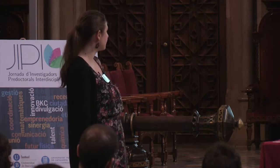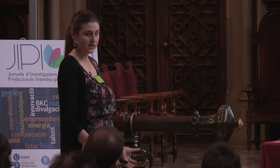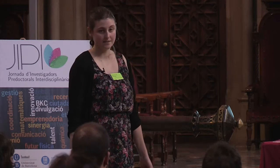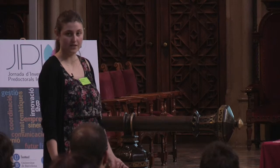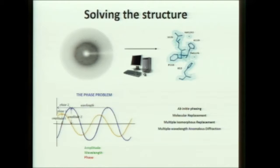As an X-ray source, we can use conventional ones, but normally we go to synchrotrons, which are able to accelerate electrons and produce high-quality X-rays. We use the ALBA synchrotron in Cerdanyola del Vallès and also the ESRF in Grenoble. The last step in the process is to solve our protein structure. This is mainly a biocomputational process, meaning going from the diffraction pattern we have collected to the obtention of an electron density map, which is like an atom model of our macromolecule.